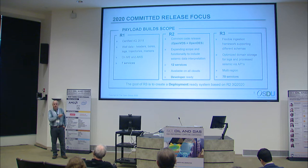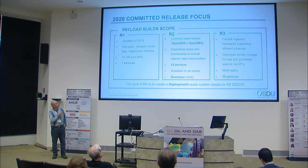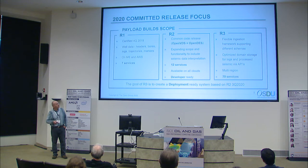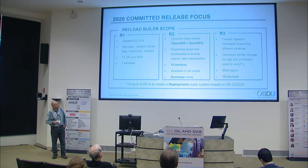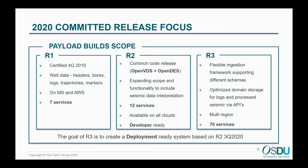Deployment-ready status is what we get in release three. Although a lot of code was thrown away between release one and two, release three builds heavily on what's happening now. Release three is due in the second half of the year, optimized for seismic via different file system types, and is meant to have up to 70 services available. It also offers multi-region support — for in-country scenarios where data sovereignty laws apply, metadata is replicated through all OSDU instances, but the actual data still resides in-country if needed.